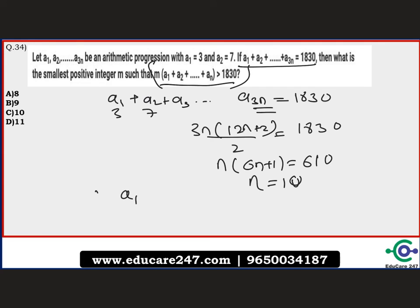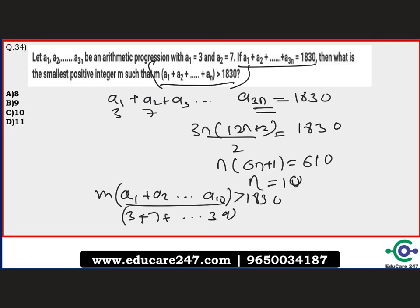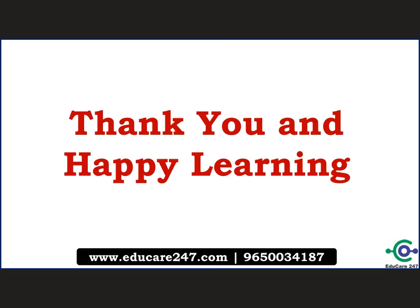With n = 10, we need m × (a1 + a2 + ... + a10) > 1830. The terms go 3, 7, ..., 39 — that's 10 terms with sum = (3+39)×5 = 42×5 = 210. So 210m > 1830, meaning m > 1830/210 ≈ 8.71. The smallest positive integer satisfying this is m = 9. The correct answer is option B, which is 9.